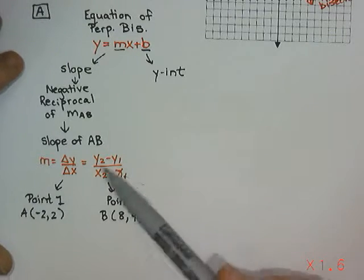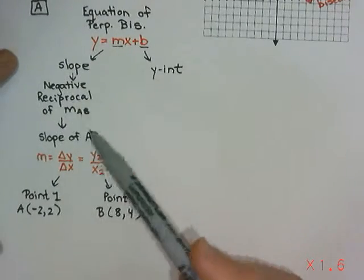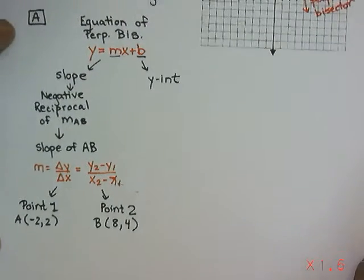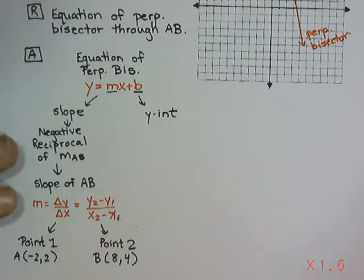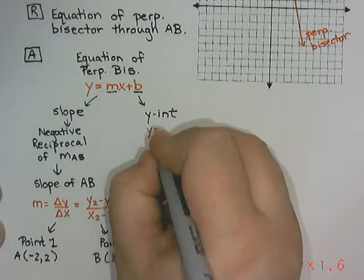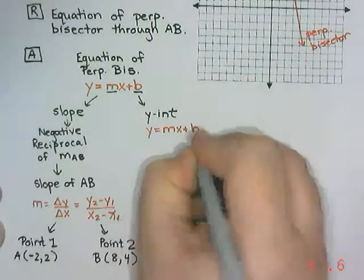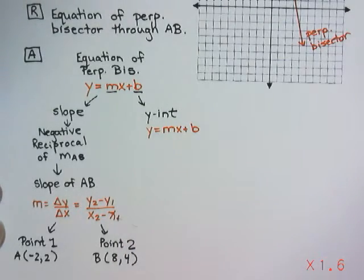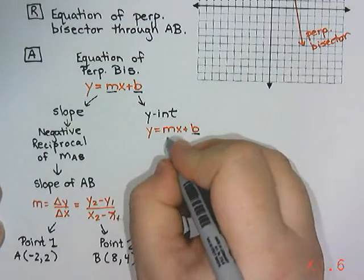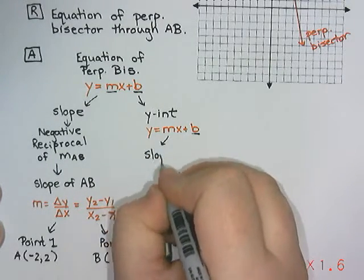On the y-intercept side, to find the y-intercept we don't have a specific equation for that, but we do use y equals mx plus b and then rearrange. So to do y equals mx plus b, this time we are looking for b. I still need to know the slope, which we will have calculated on the slope side.